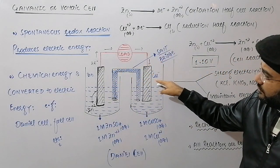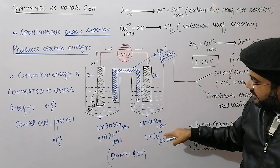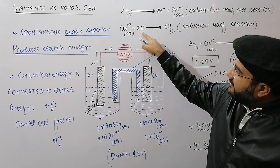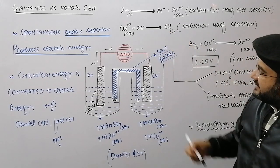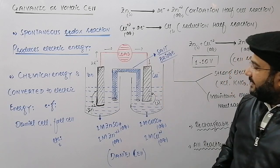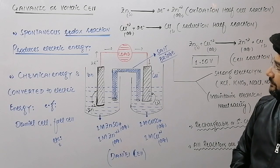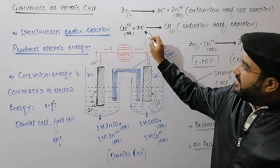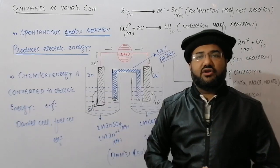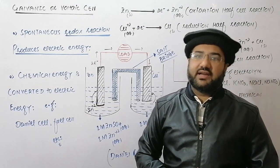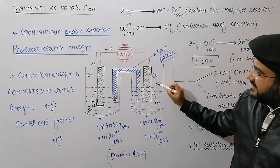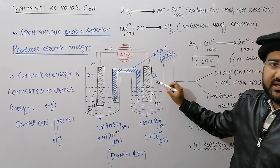When the electrons move to the copper half, there are copper ions in the one molar solution. These copper ions will accept the electrons, get reduced, and metallic copper is formed, which starts depositing on the copper plate. Since gain of electrons is taking place, this is the reduction half reaction, and this copper will act as the cathode because reduction always takes place at the cathode. So zinc is the anode and copper is the cathode; zinc is oxidized and copper ions are being reduced.